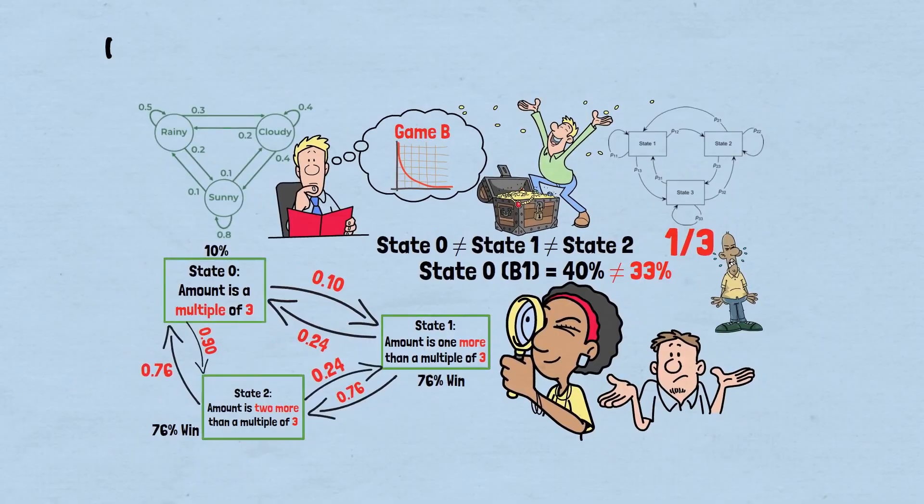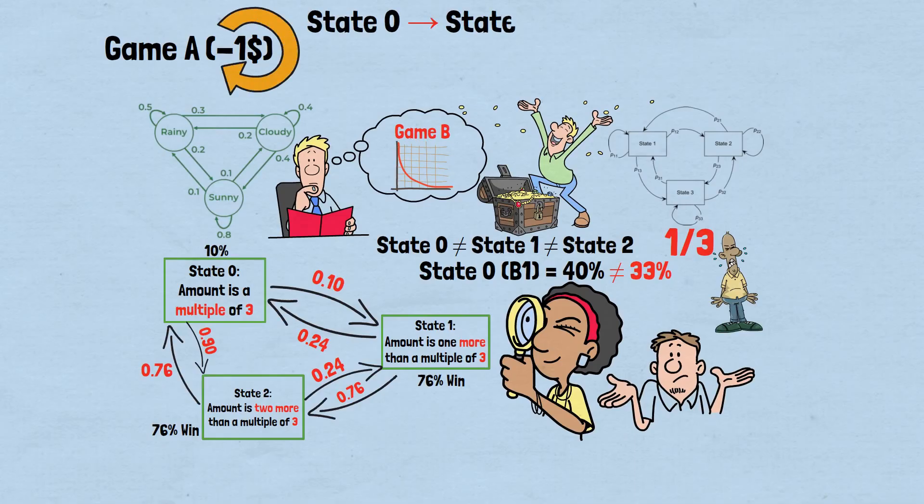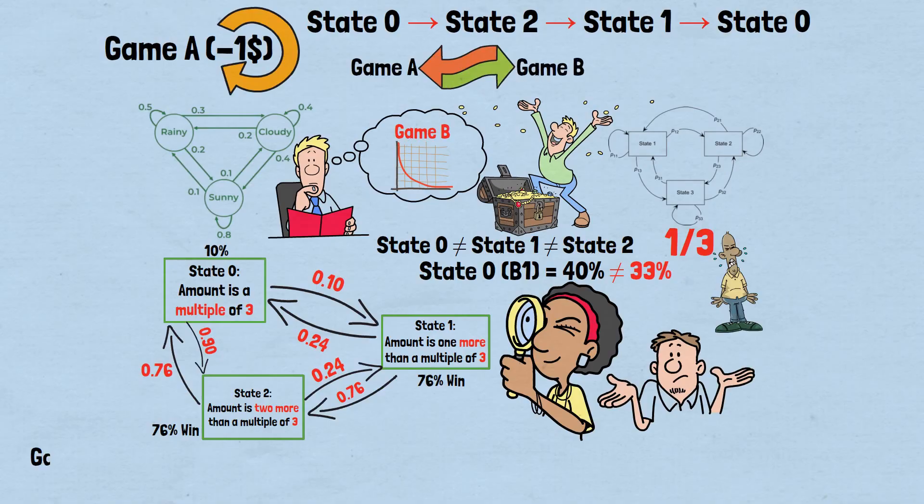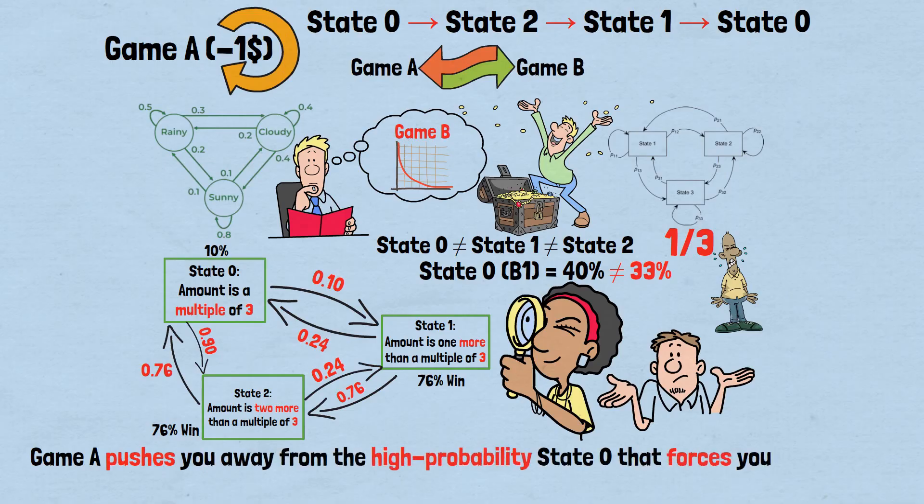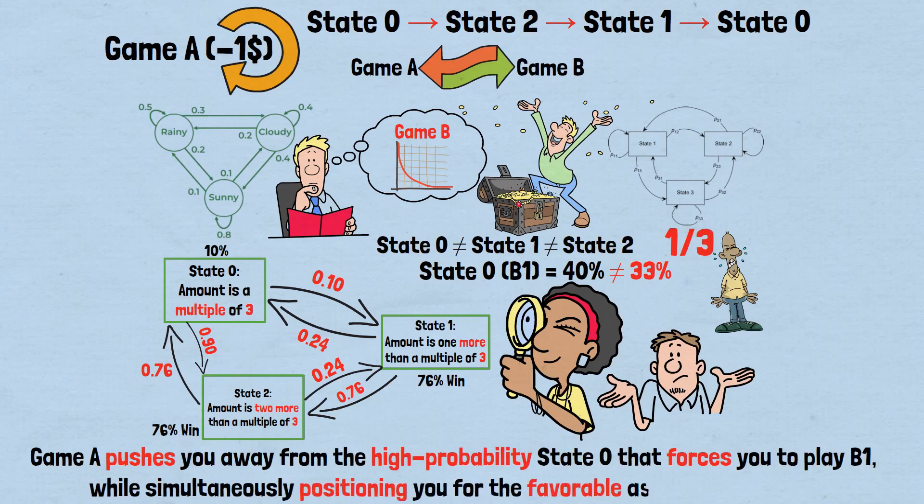Game A has a different effect on these states. Since Game A always subtracts exactly $1, it cycles through the states in a predictable pattern: state zero to state two, to state one, to state zero. When you alternate Game A with Game B, Game A's predictable cycling disrupts the natural equilibrium that makes Game B unprofitable. Game A pushes you away from the high-probability state zero that forces you to play B1, while simultaneously positioning you for the favorable aspects of Game B.